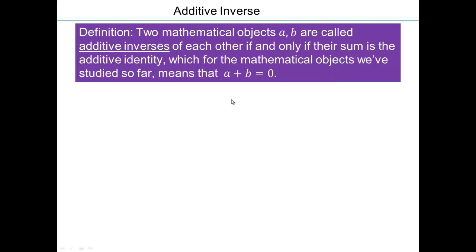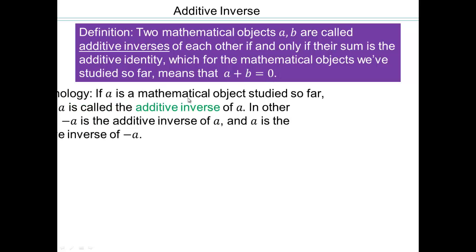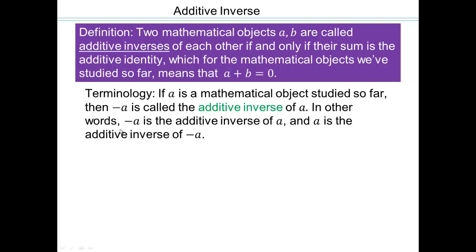Before we can do more subtraction, let's talk about some additional concepts that will aid us. Two objects A and B are called additive inverses of each other if and only if their sum is the additive identity. Where 0 is our additive identity, if the addition of two objects gives us 0, then A and B are additive inverses. A is additive inverse of negative A, and negative A is additive inverse of A, because they add together to give you 0.